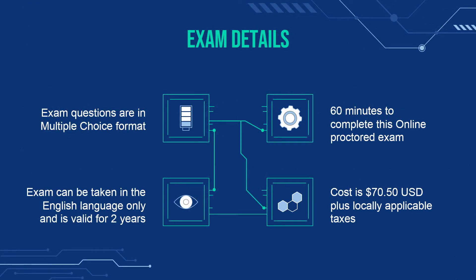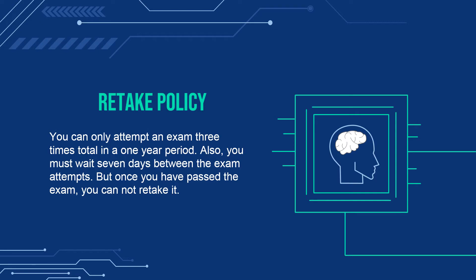The exam questions are in multiple-choice format. You get 60 minutes to complete this online proctored exam. Moreover, the exam can be taken in the English language only, and is valid for two years. Also, the cost is $70.50 plus locally applicable taxes and fees. You can only attempt an exam three times total in a one-year period. Also, you must wait seven days between the exam attempts.